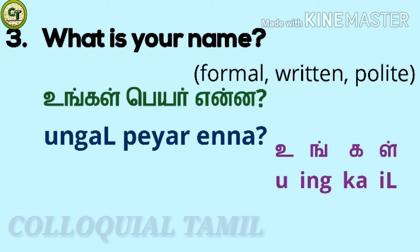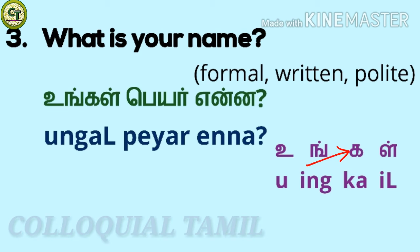'Ungal' was in colloquial greetings part four, in the sentence 'ungal kolandheikal eppadhi irikki raga.' As a reminder: 'u' is a short zone vowel, 'ing' a consonant, 'ka' a short zone letter, 'ill' a consonant — together: 'ungal.' So one more time: 'ungal pair enna.'